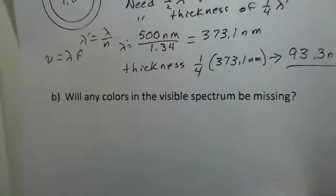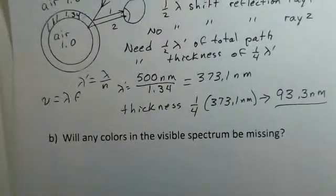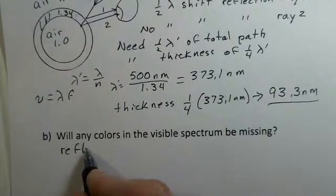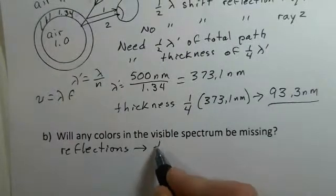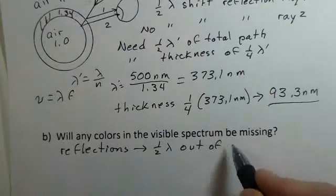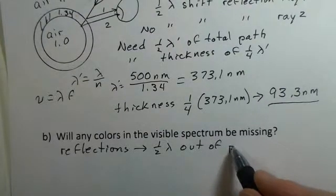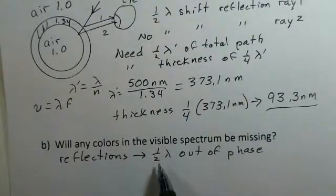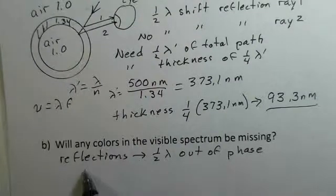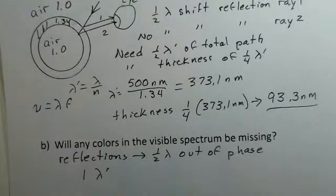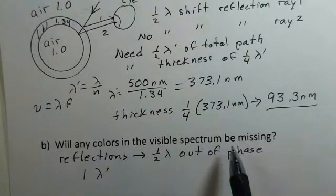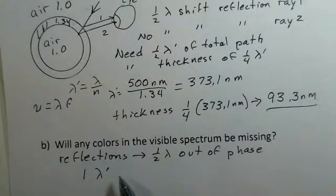So part B here. Will any colors in the visible spectrum be missing? We just did constructive interference. Will there be some destructive interference? Well, we're already out of phase. We have half wavelength out of phase due to one reflection shifting and the other not shifting half a wavelength. So what do we need for the total path in the soapy water such that we would maintain this half wavelength out of phase condition? Hopefully you're saying we need one full wavelength of path in the material. So we need a situation here where our lambda prime - we'll find lambda in the air later - but our lambda prime would need to be such that we have one wavelength of path in the soapy water.